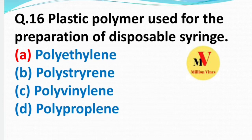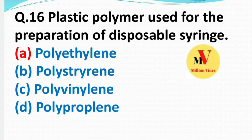Next question: The plastic polymer used for the preparation of disposable syringes — the right answer is B — polyethylene.